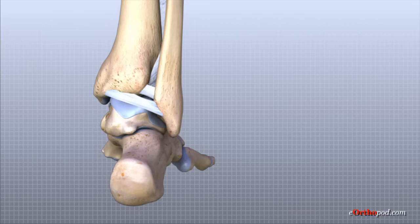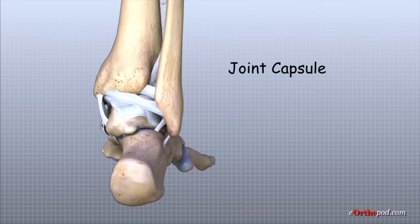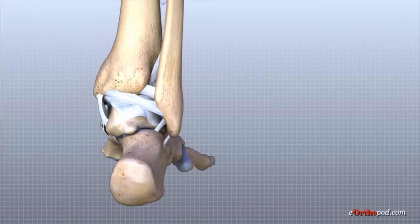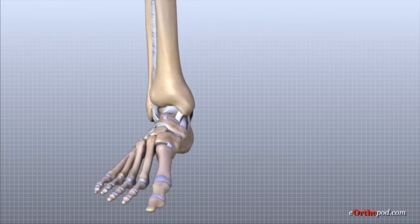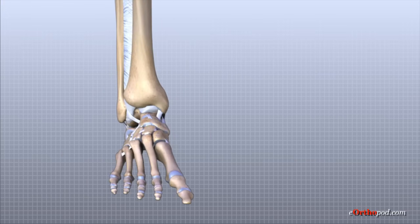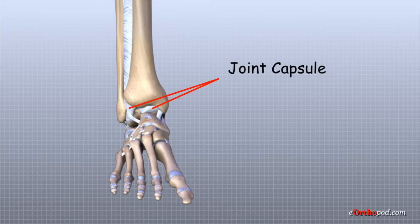The ligaments that surround the ankle joint help form part of the joint capsule. The joint capsule is a watertight sac that forms around all joints. It is made up of the ligaments around the joint and the soft tissues between the ligaments that fill in the gaps and form the sac.